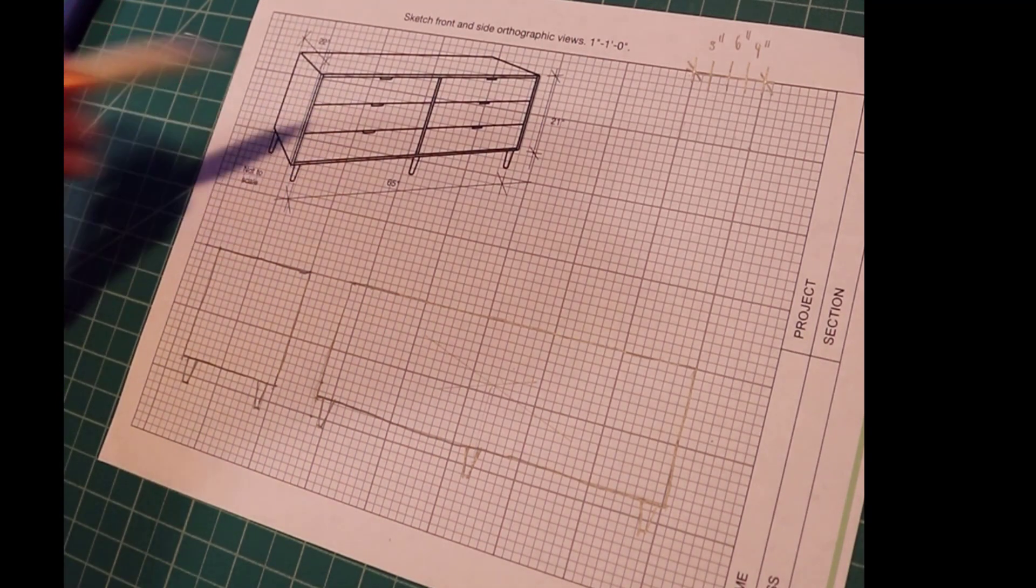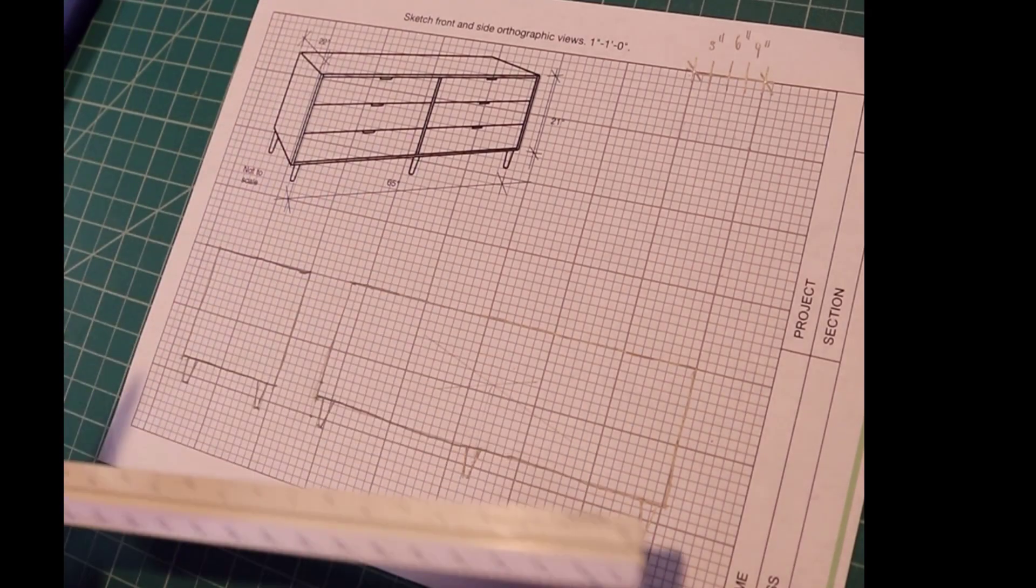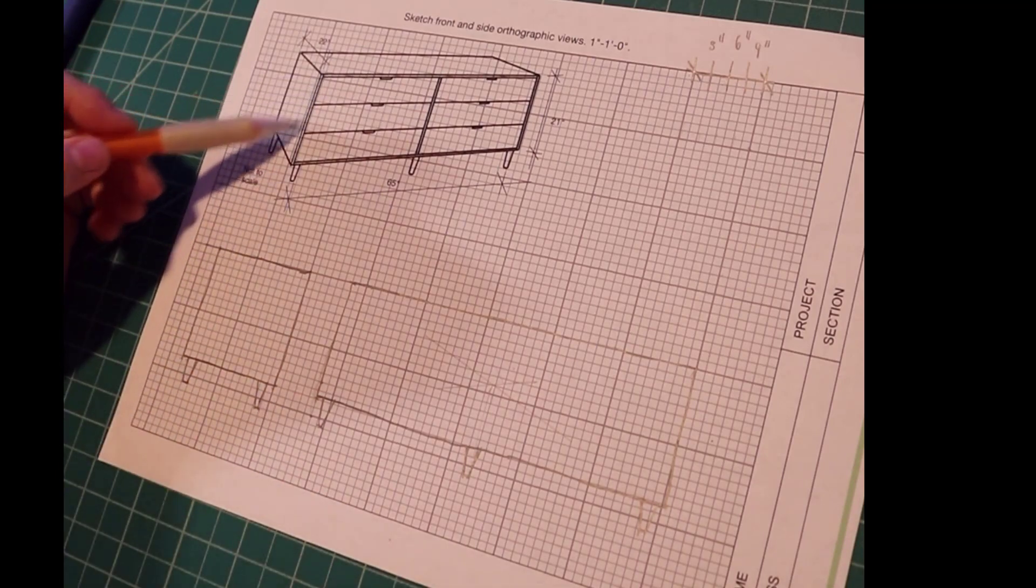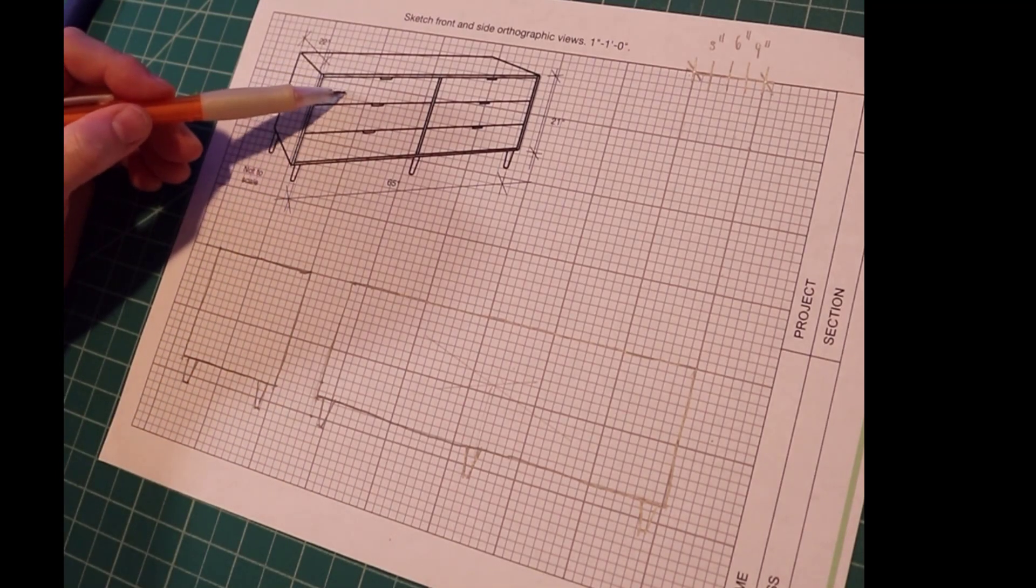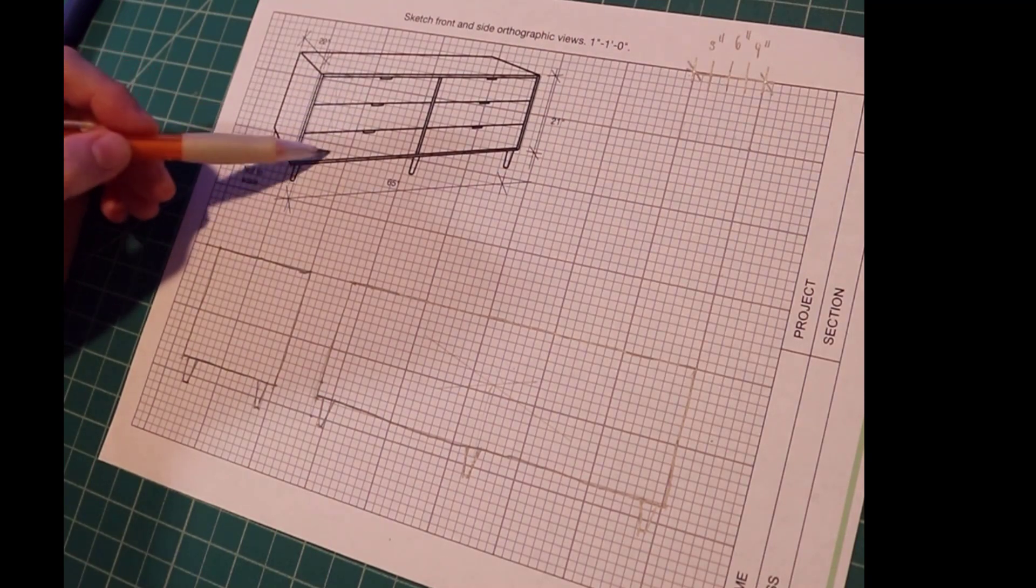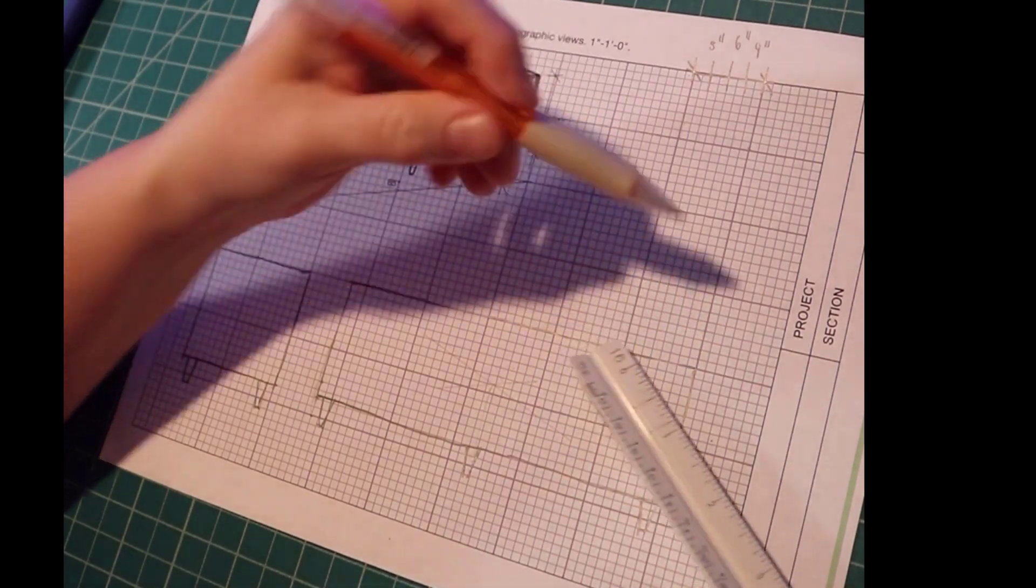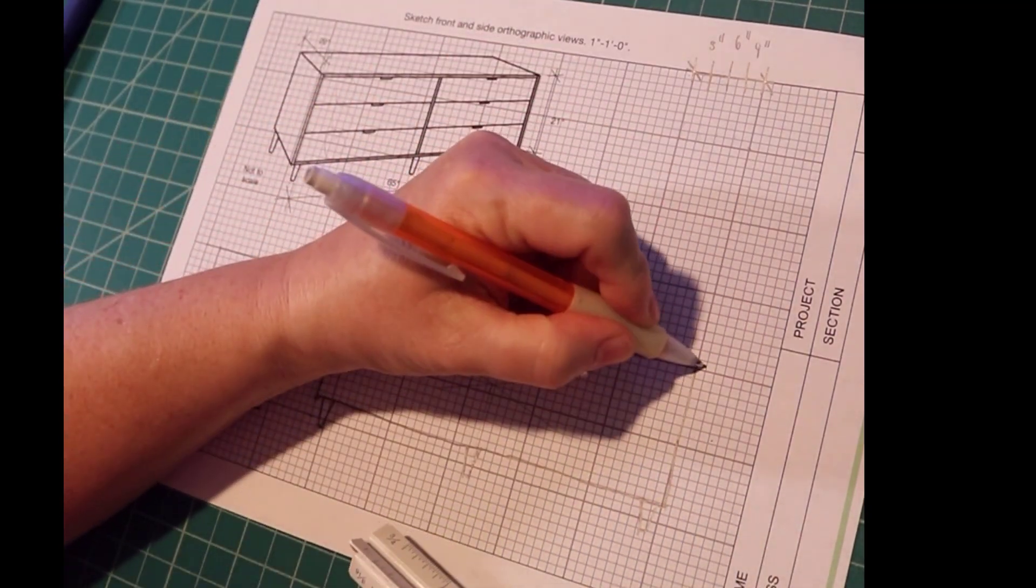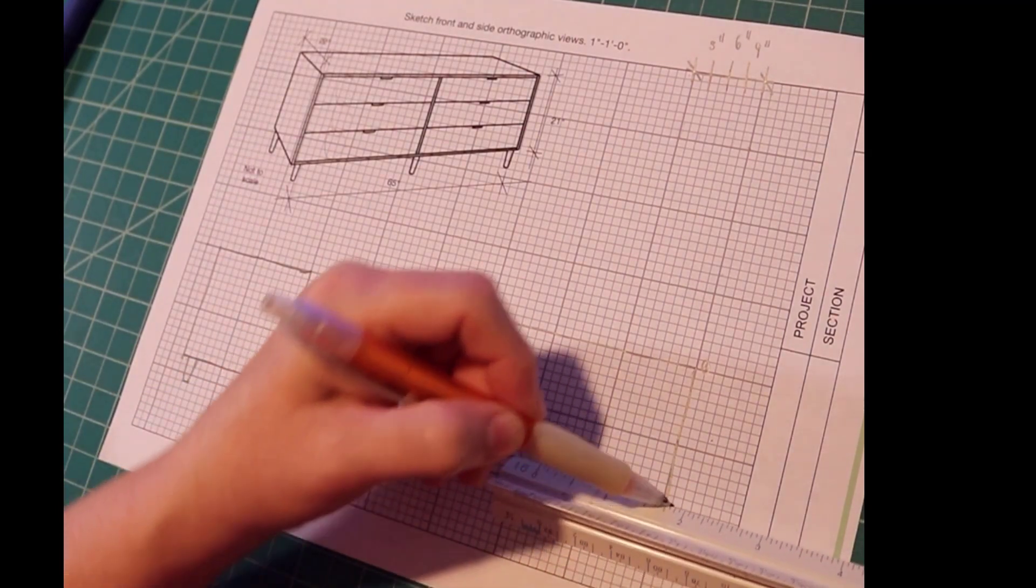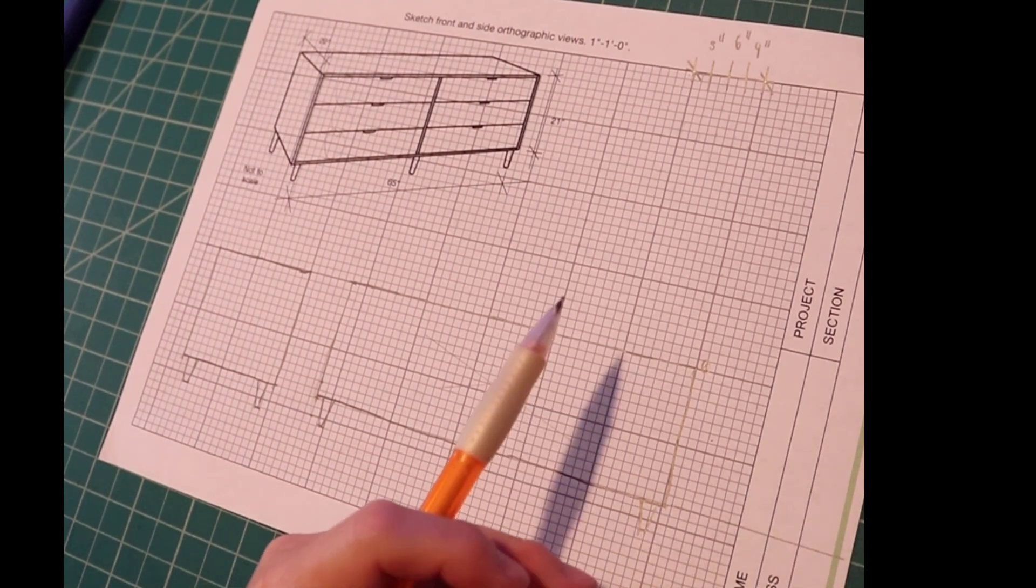So here we have three drawers. This is a little geometry trick that you can use to draw these lines so that these spaces are all equal. Find a scale where you can put the 0 here and the 3 somewhere along a construction line there.